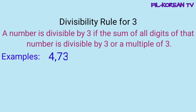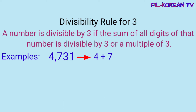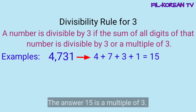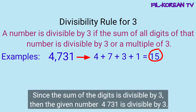Examples? 4,731. I-plus natin ang lahat ng digits. 4 plus 7 plus 3 plus 1 equals 15. Ang answer na 15 ay multiple ng 3. So, divisible by 3 ito. Dahil divisible by 3 yung answer ng sum ng digits, ibig sabihin yung given number na 4,731 ay divisible by 3.